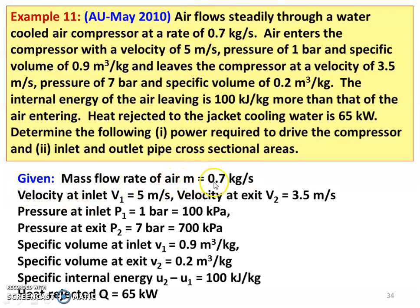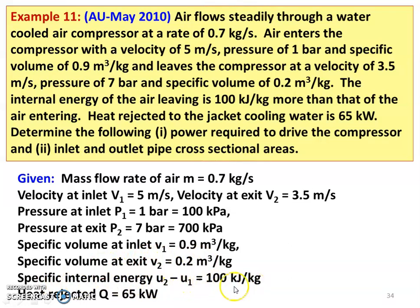Write down the given data. Mass flow rate of air M = 0.7 kilogram per second. Velocity at the inlet V1 = 5 meters per second. Velocity at the exit V2 = 3.5 meters per second. Pressure at the inlet P1 = 1 bar = 100 kilo Pascal. Pressure at the exit P2 = 7 bar = 700 kilo Pascal. Specific volume at the inlet = 0.9 meter cube per kilogram. Specific volume at the exit = 0.2 meter cube per kilogram. Specific internal energy U2 minus U1 = 100 kilojoules per kilogram. Heat rejected Q = 65 kilowatts.